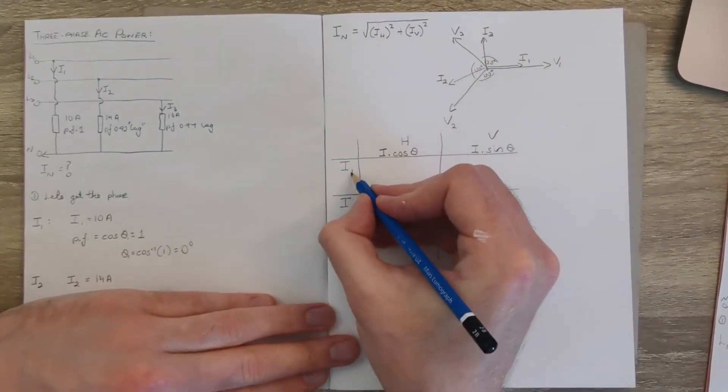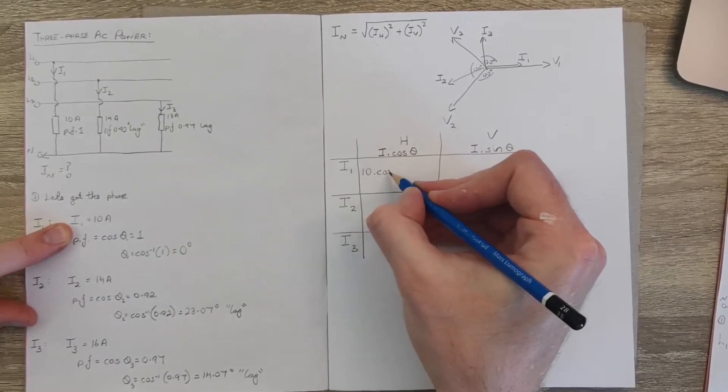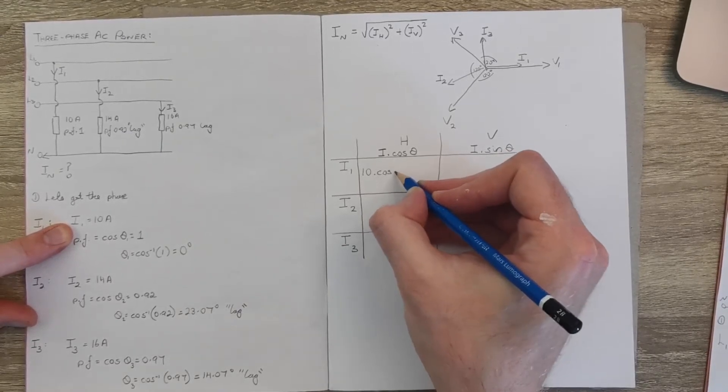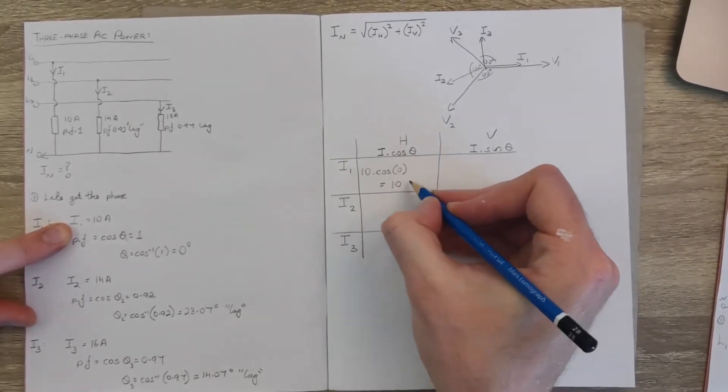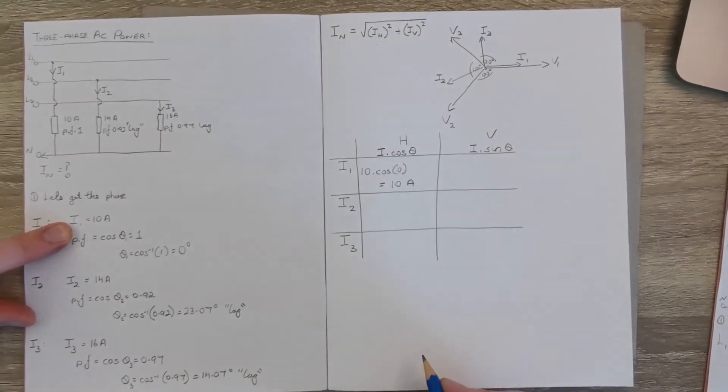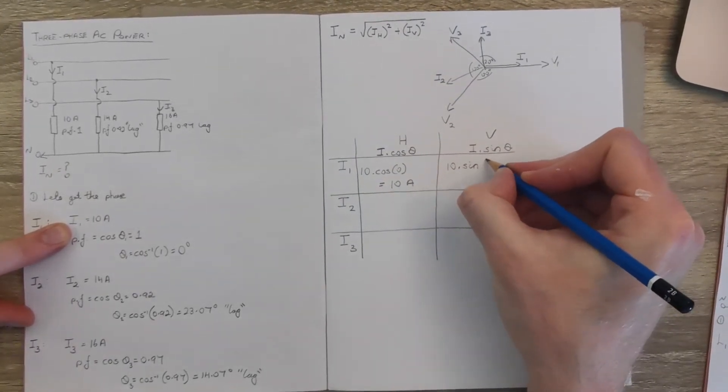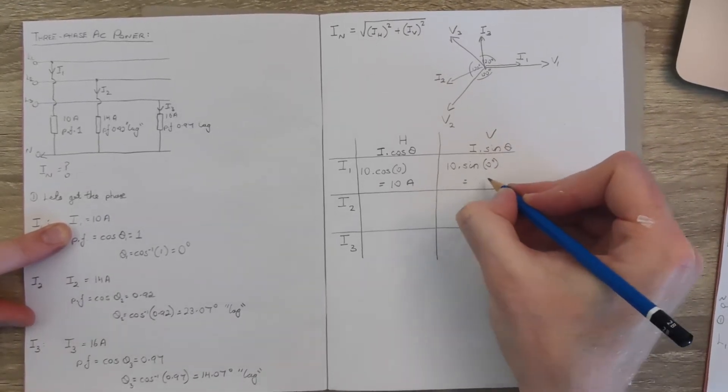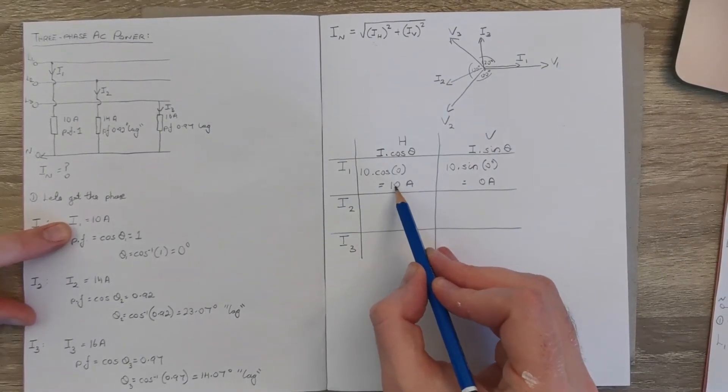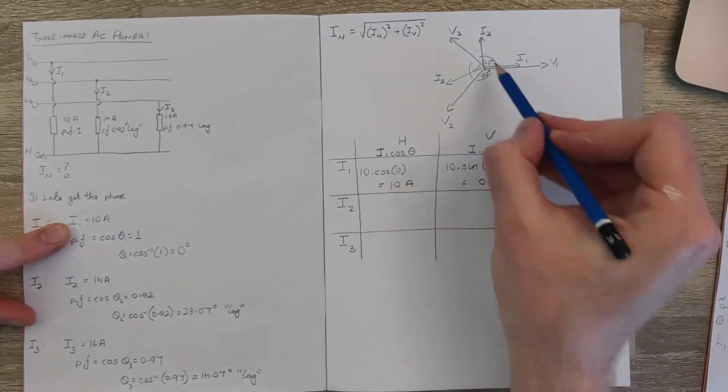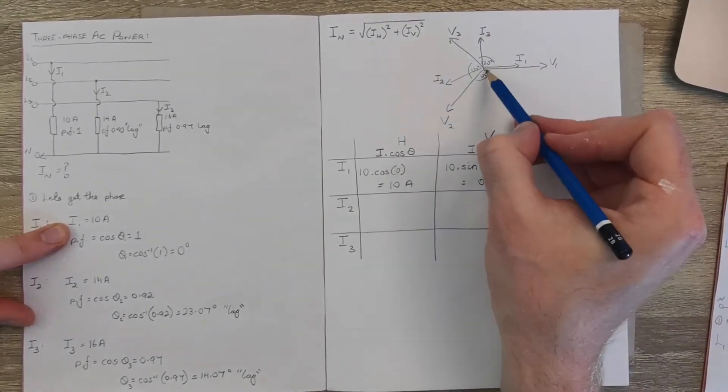So let's try this out for i1. It's 10 amps times the cosine of 0, and if you put that into your calculator you'll get out that that's just 10 amps. And the vertical component is 10 times the sine of 0, and that'll be 0 amps. Which makes sense because if we look at our drawing, our quick sketch, we'll see that for i1 it's completely on 0 degrees, so there is no vertical component, it's all in the one direction here.